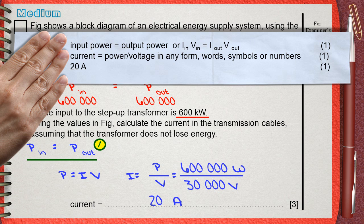I in V in equals I out V out. Any one of these two forms. The second mark is for the rule of the current. Current equals power divided by the voltage. This gives the second mark, or using the given numbers. The third mark is for the final answer, 20 amperes.